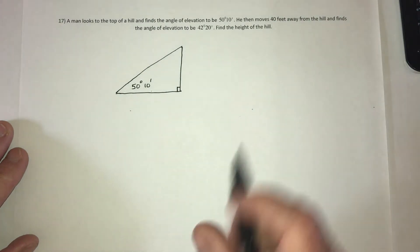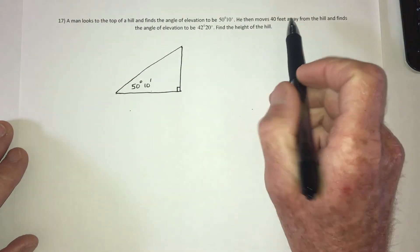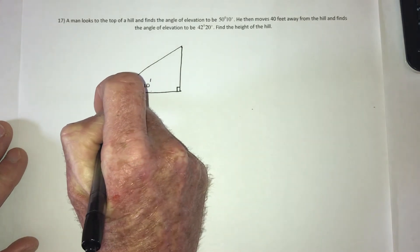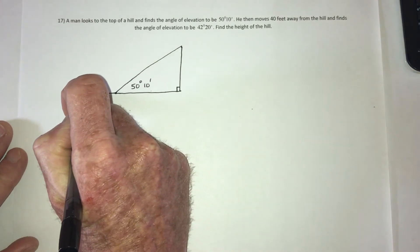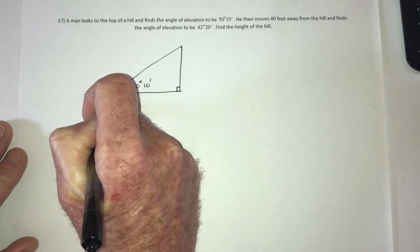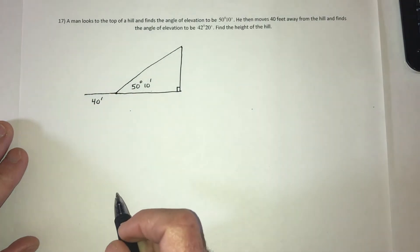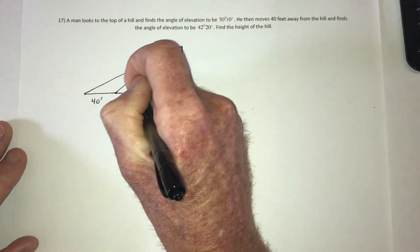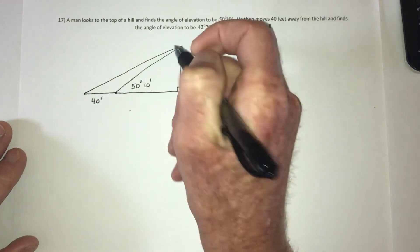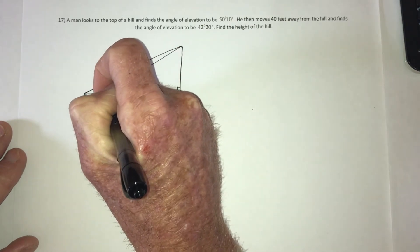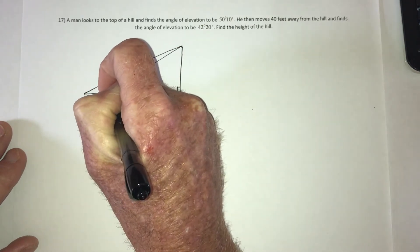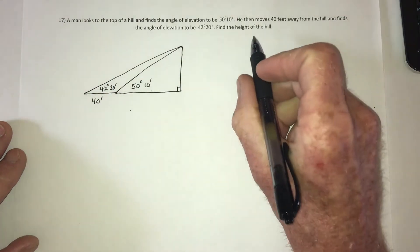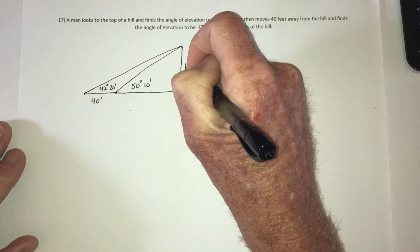Okay, then the person moves 40 feet away. So they were standing right here, then they move 40 feet away, and the angle of elevation is now smaller. So it's now 42 degrees and 20 minutes. Find the height of the hill. So this is the height.